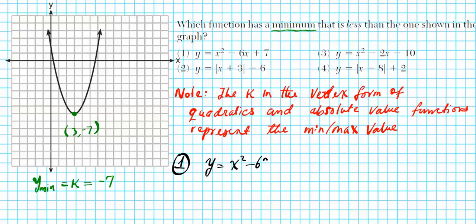Looking at the graph, the vertex coordinates are (3, negative 7), so the y-minimum, which is the k value, is negative 7. We need to find which option in vertex form has a k value smaller than negative 7. Starting with option 1: y equals x squared minus 6x plus 7. We'll put this into vertex form by completing the square. We have y equals x squared minus 6x, an incomplete square. To complete it, we add (b/2) squared. Here b is negative 6, so b/2 is negative 3, and squaring gives positive 9. Adding 9 to complete the square and subtracting 9 to keep the equation unchanged, the vertex form is y equals (x minus 3) squared minus 2. The k value is negative 2, which is greater than negative 7, so option 1 is not the answer.